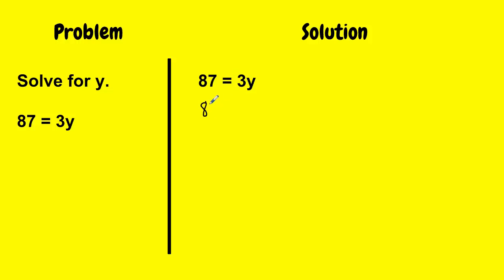So here I have the problem 87 equals, and since I know there's no operation between the number 3 and y, it's 3 times y. So I'm just emphasizing this is multiplication here.